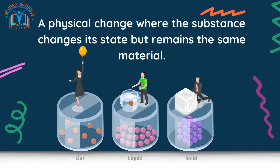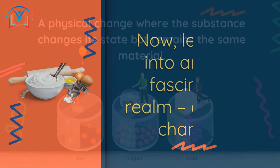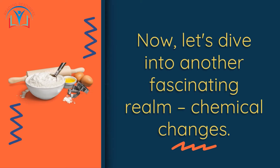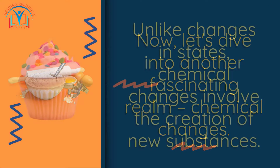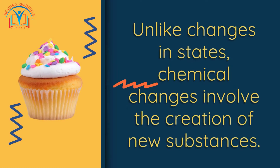Melting is a physical change, where the substance changes its state but remains the same material. Now let's dive into another fascinating realm: chemical changes. Unlike changes in states, chemical changes involve the creation of new substances.